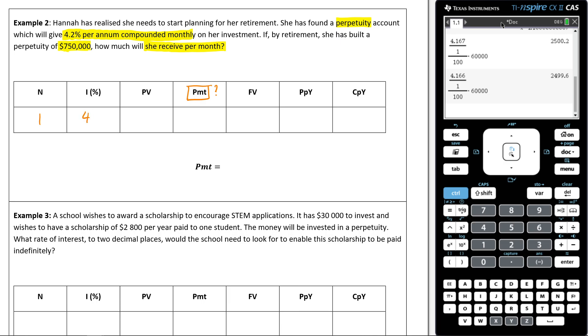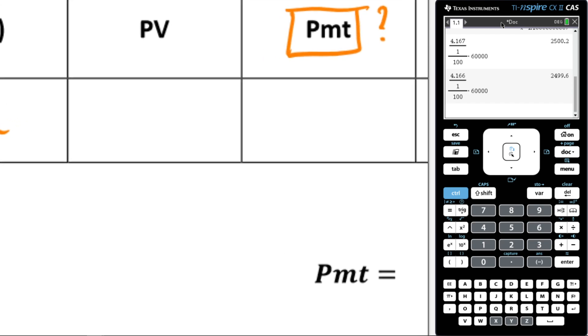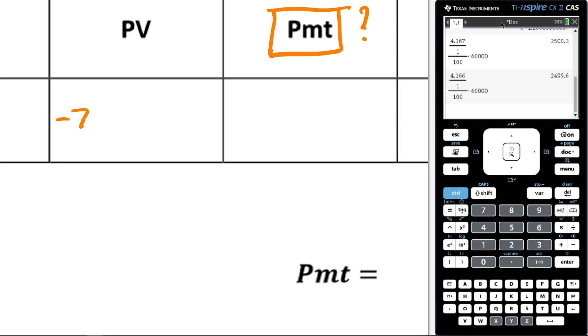My interest rate is 4.2. The present value is the amount of money that we put into the perpetuity. Now remember, this is going to be negative because it's no longer in our pocket. It's going to be $750,000. But remember, let's zoom in here. We're putting it into the perpetuity. It's no longer in our pocket. That means it's going to be negative $750,000.